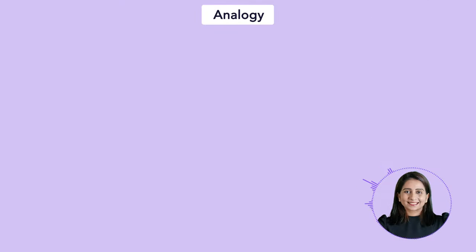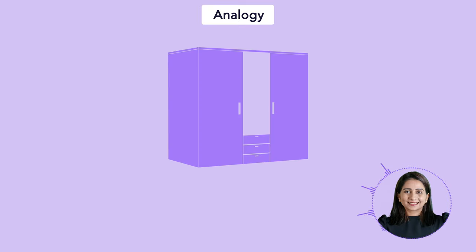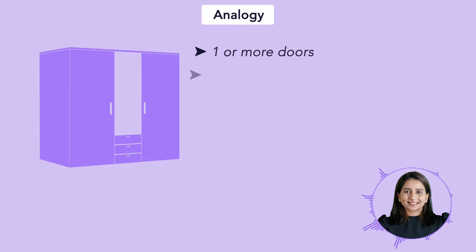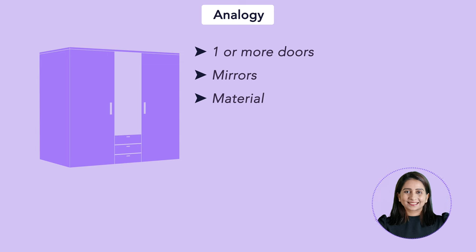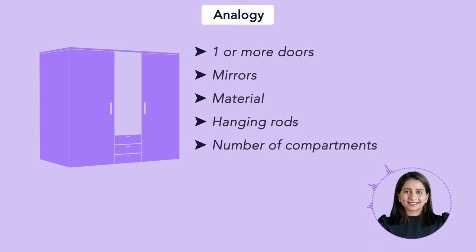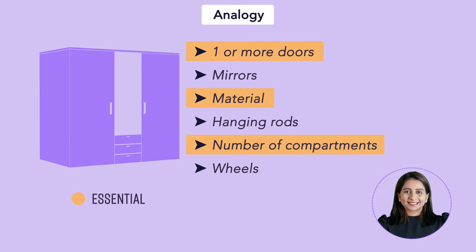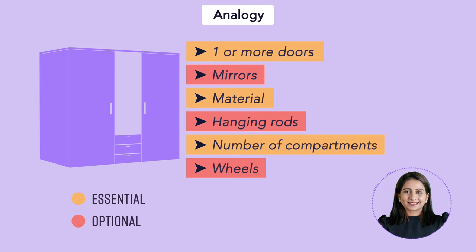Let's consider a scenario of building a wardrobe. Wardrobes can be of multiple types — they can have one door, two doors, or multiple doors. There can or cannot be mirrors on the wardrobe. The material can be metal, wood, plastic, or something else. There can be hanging rods, varying numbers of compartments, and some wardrobes might come with wheels. Some features like doors and locks are essential, while mirrors and wheels might be optional.